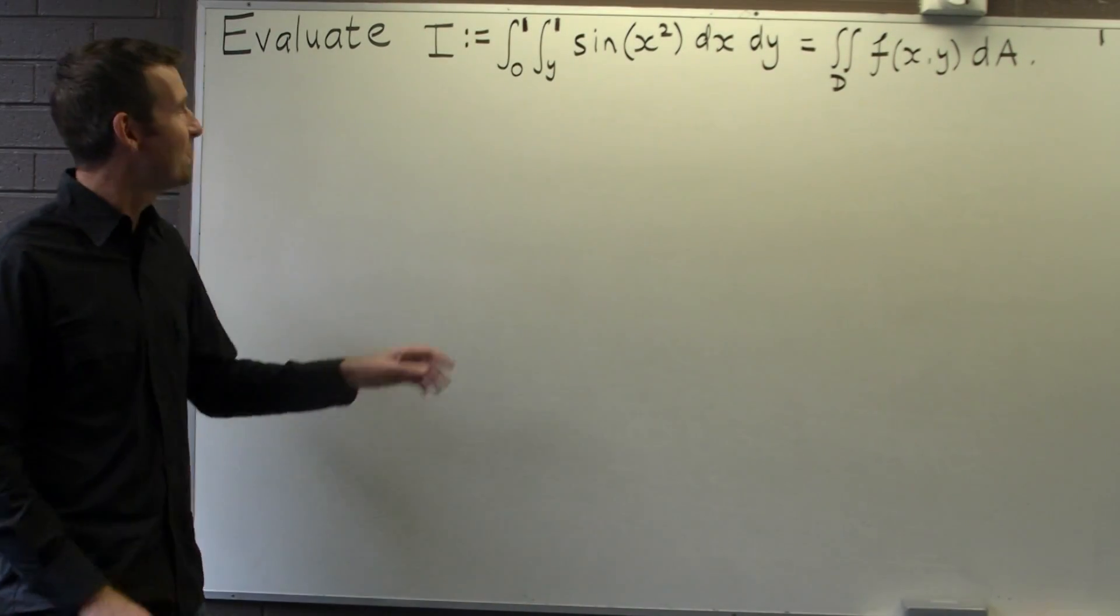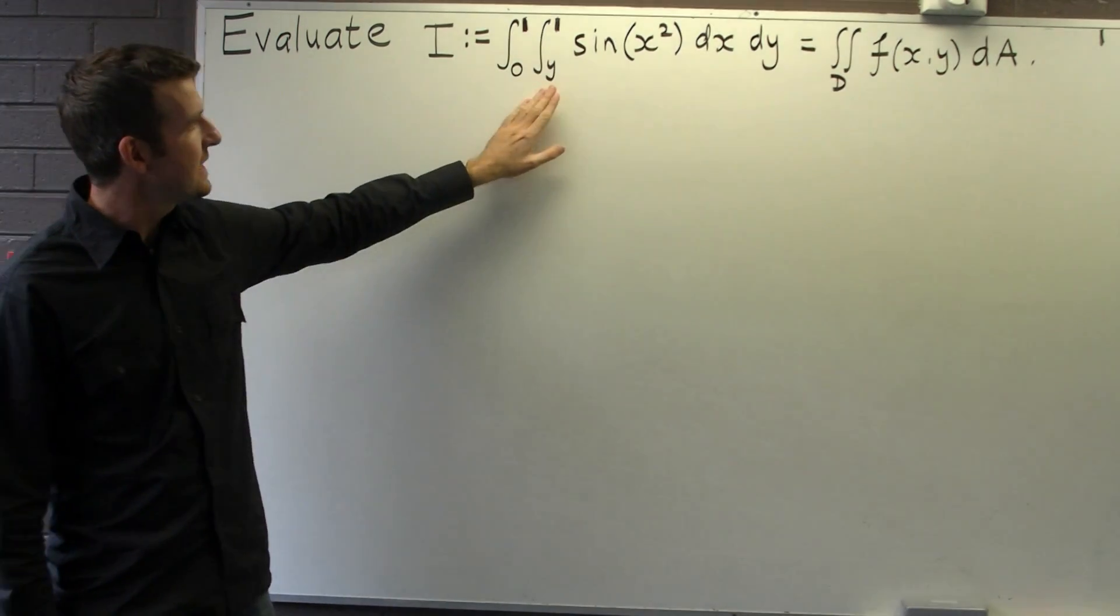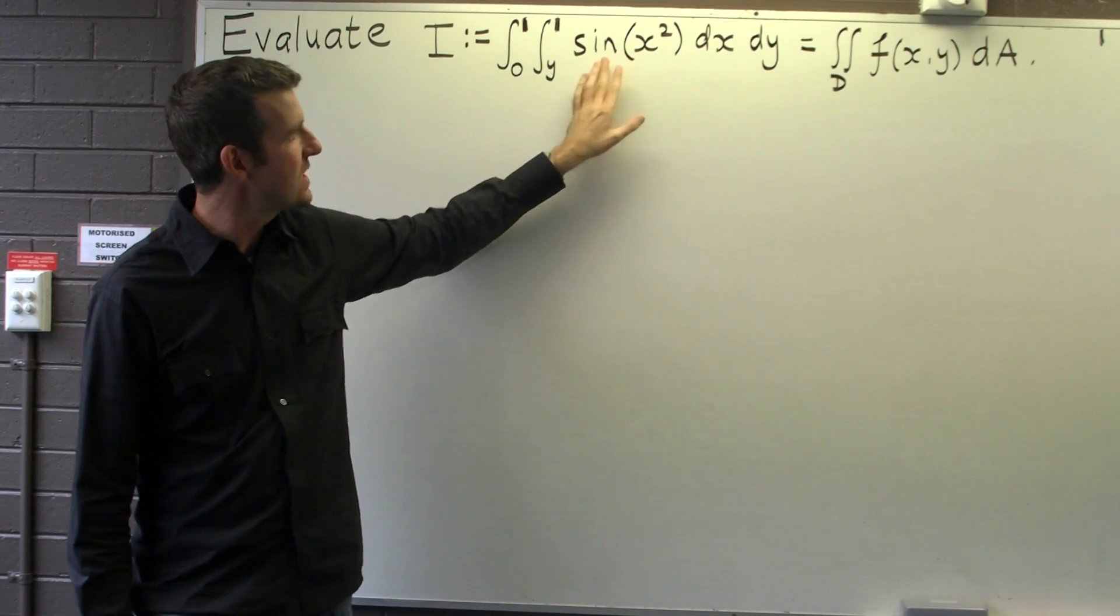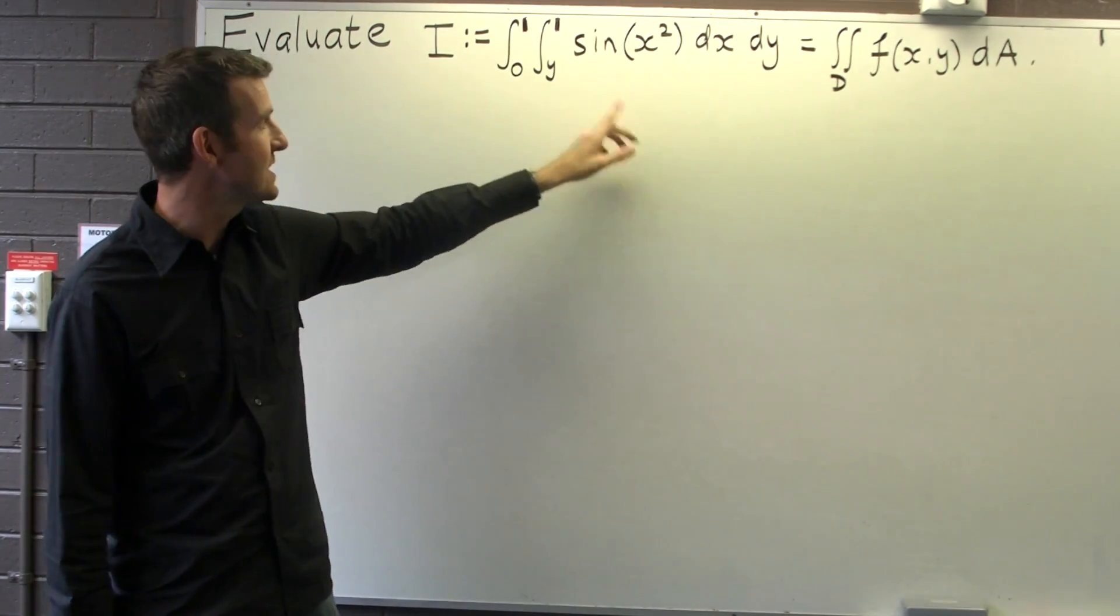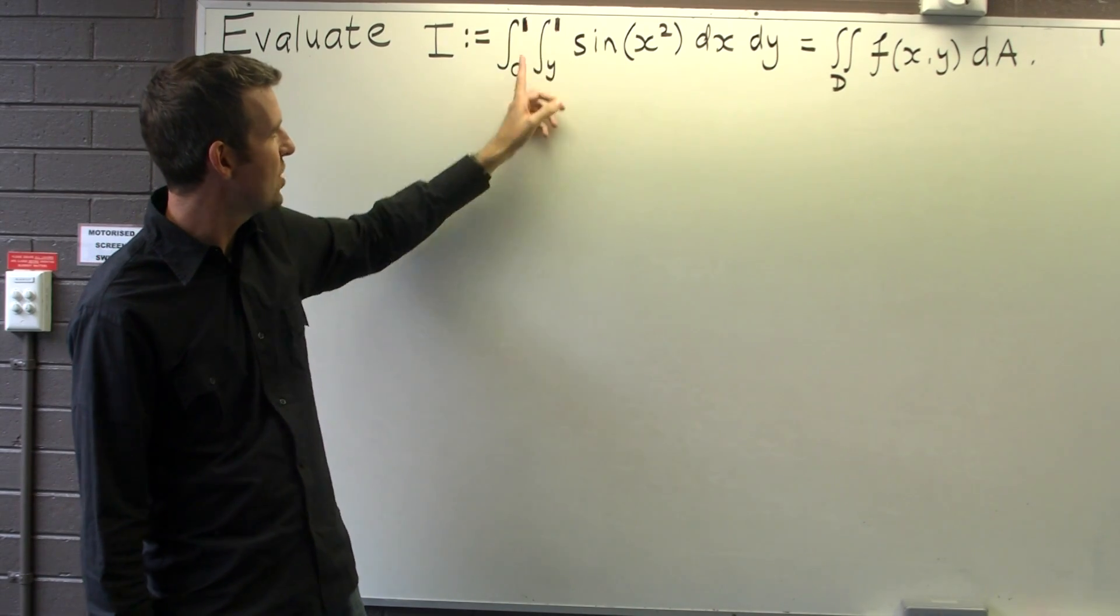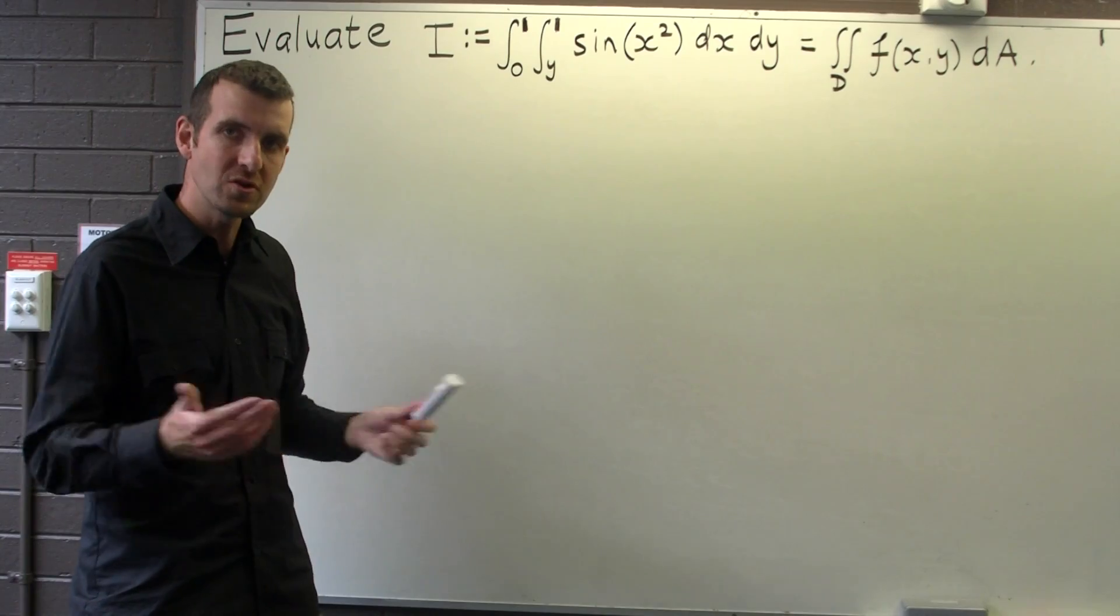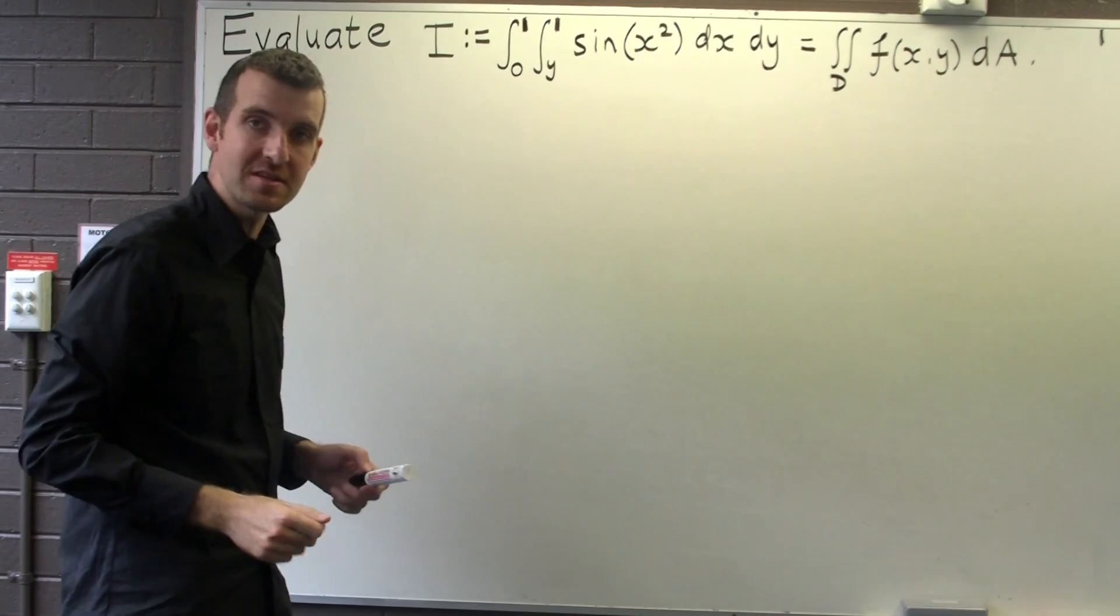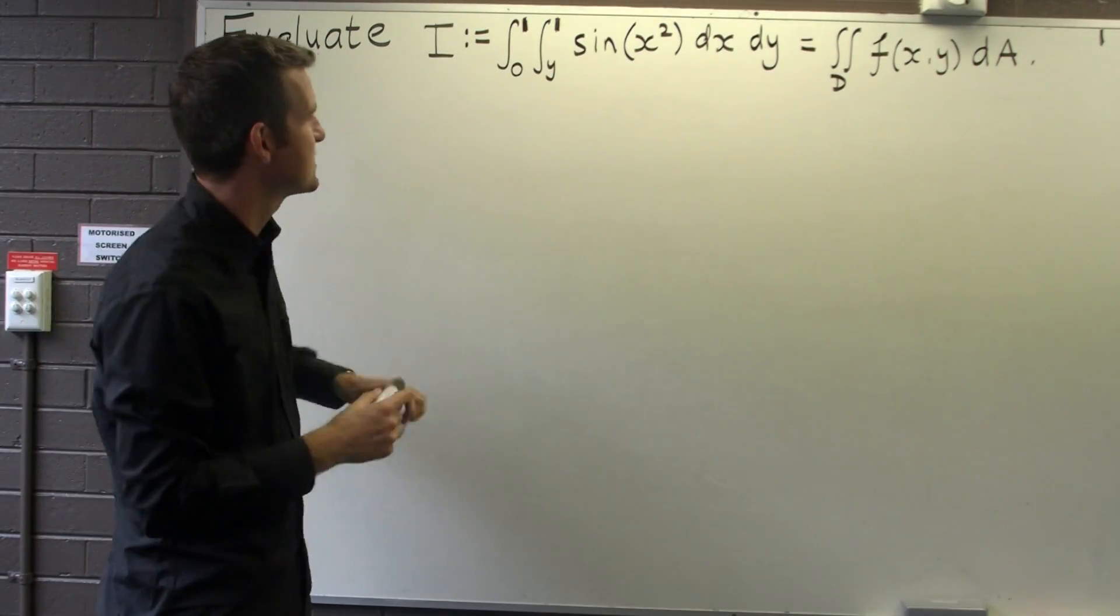So let's consider the following double integral defined as I. Here we want to take the double integral of sine of x squared, and our region D, our region of integration, is described by these upper and lower limits. Now, usually when we're looking at double integrals, we work on the inside integration first and then move on to the outside integration. But there's a problem with this one.